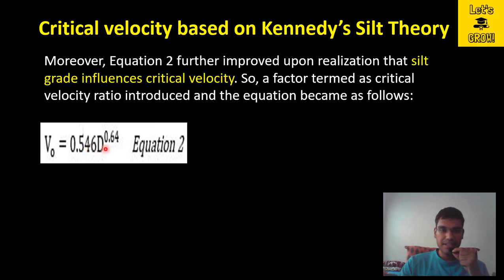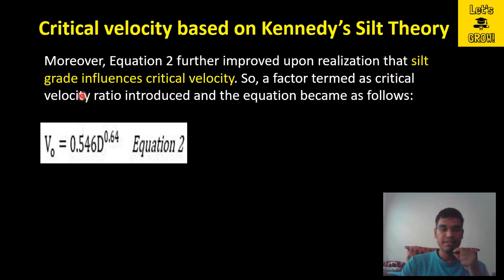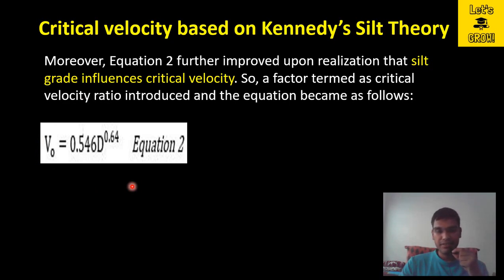Substituting the values of C and N, the equation becomes V₀ = 0.546 × D^0.64. Furthermore, this equation was further improved upon the realization that silt grade influences critical velocity. Therefore, a factor termed the critical velocity ratio was introduced and the equation was updated accordingly.